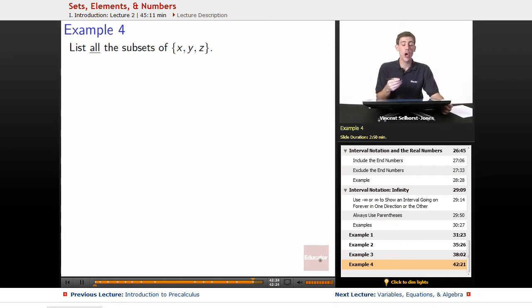Final example, example 4: list all the subsets of x, y, z. The very first subset that we have to remember is the empty set. The empty set shows up as a subset for everybody, so that's our very first subset.